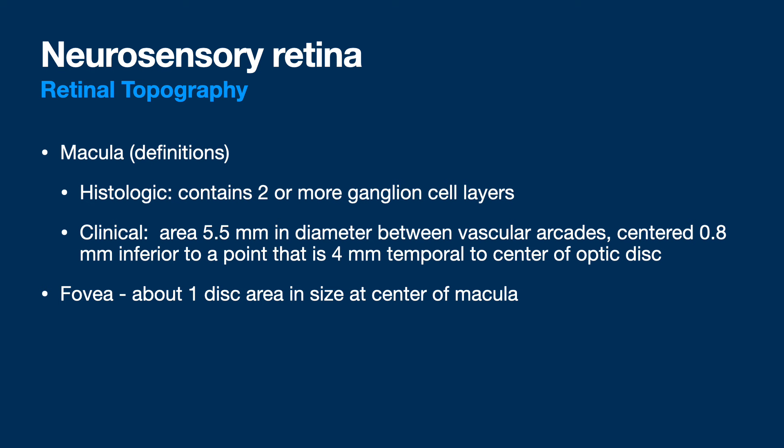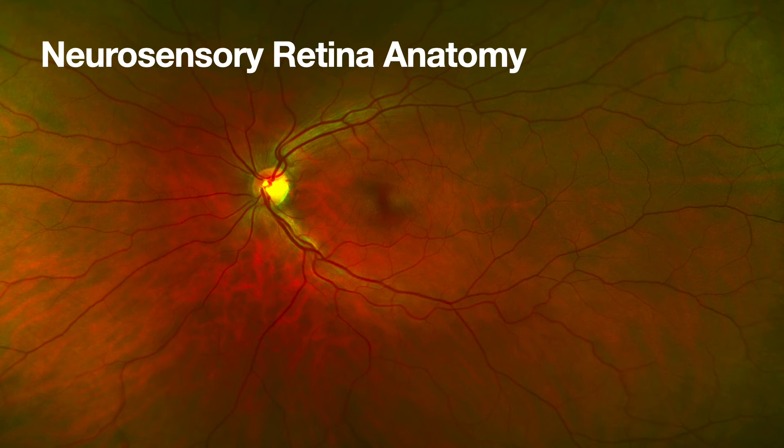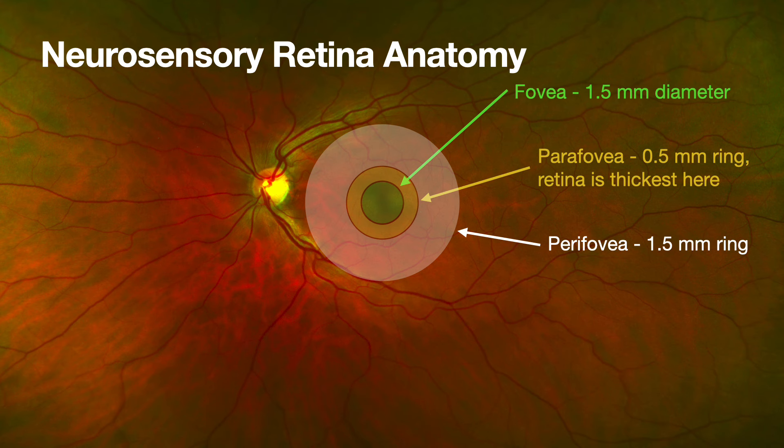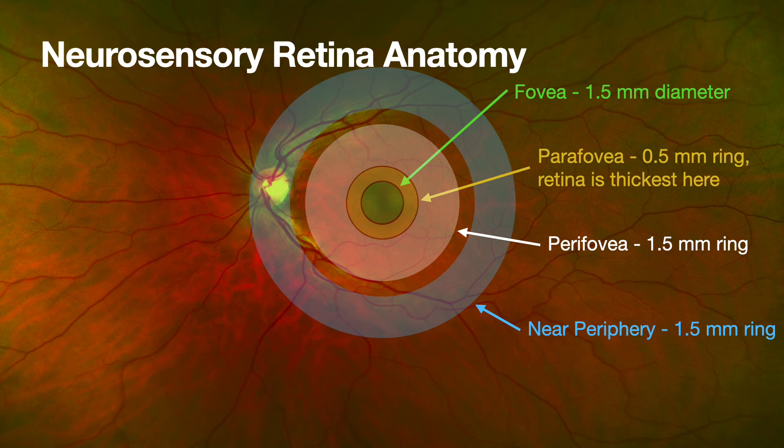The fovea is about 1.5 millimeters — a disc area. The foveola is the floor of the fovea, and the umbo at the center is about 200 microns with elongated cones right in there. The parafovea is a small ring, then the perifovea a bit bigger — and that's the whole macula. The near periphery, equatorial, and pre-equatorial zones are also described. The FAZ is highly variable — between 250 to 600 microns normally — and in disease states like diabetes it gets larger.